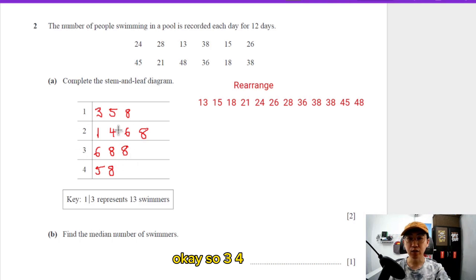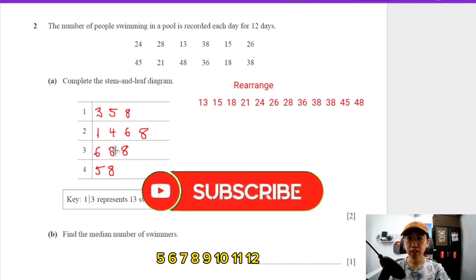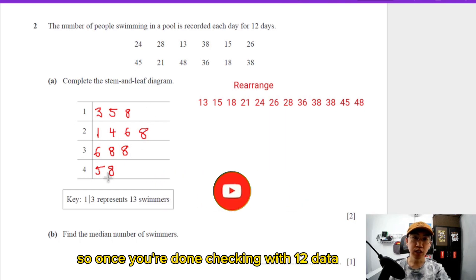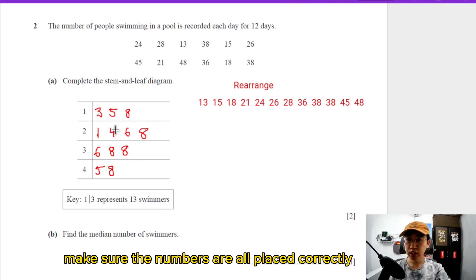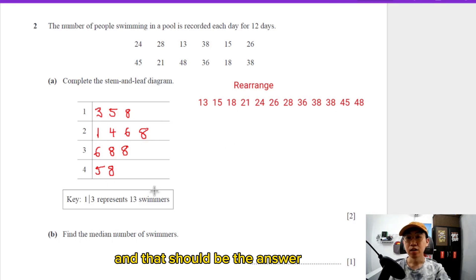You have 12 data - 3, 4, 5, 6, 7, 8, 9, 10, 11, 12. Once you're done checking with 12 data, make sure the numbers are all placed correctly and that should be the answer.